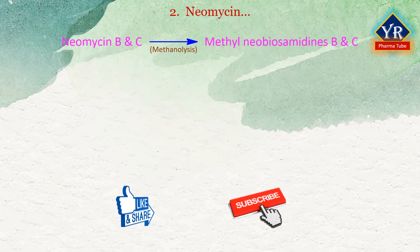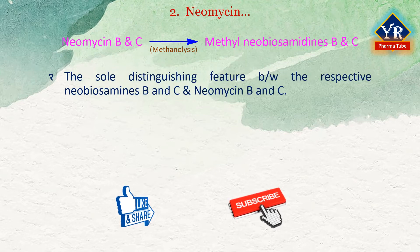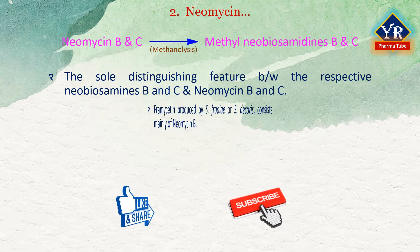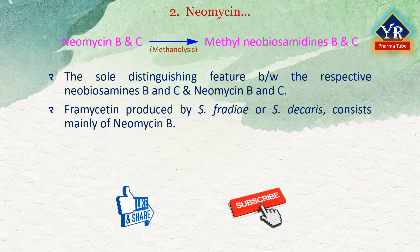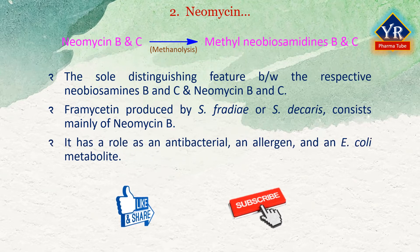On methanolysis, neomycin B and C give methyl neobiosamides B and C respectively. The distinguishing feature of neobiosamides B and C is the difference in stereochemistry at position 5 in the components neosamidin B and C. This is in fact the sole distinguishing feature between the respective neobiosamides B and C and neosamidinds B and C. Framycetin, produced by Streptomyces fradiae or Streptomyces decaris, consists mainly of neomycin B. Neomycin has a role as an antibacterial agent, an allergen, and an E. coli metabolite.